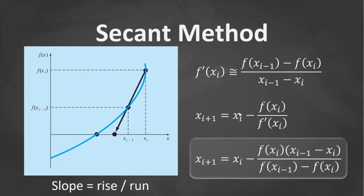So for these cases, the derivative can be approximated by a backward finite divided difference. Instead of the derivative, we use this to approximate the derivative.